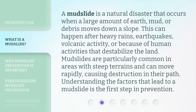A mudslide is a natural disaster that occurs when a large amount of earth, mud, or debris moves down a slope. This can happen after heavy rains, earthquakes, volcanic activity, or because of human activities that destabilize the land. Mudslides are particularly common in areas with steep terrains and can move rapidly, causing destruction in their path. Understanding the factors that lead to a mudslide is the first step in prevention.